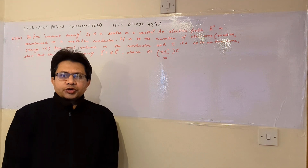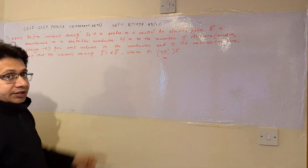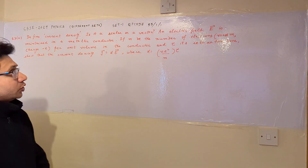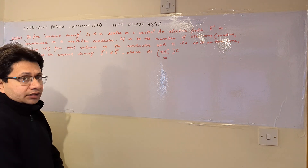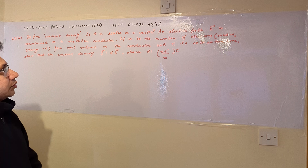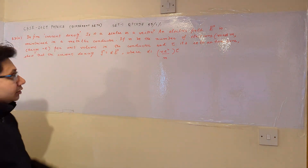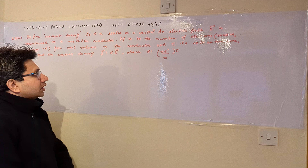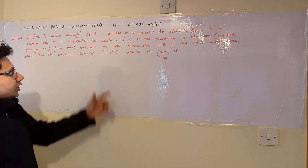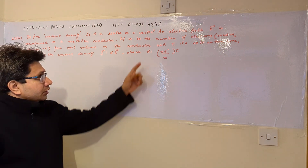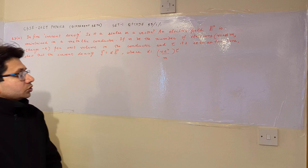Hello students, the question is: define current density — is it a scalar or a vector? An electric field E is maintained in a metallic conductor. If n is the number of electrons of mass m and charge minus e per unit volume, and τ is the relaxation time, show that the current density j equals αE where α equals ne² τ divided by m.